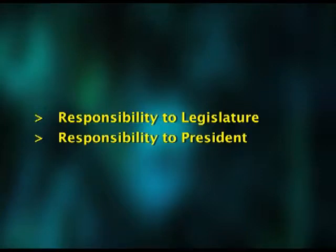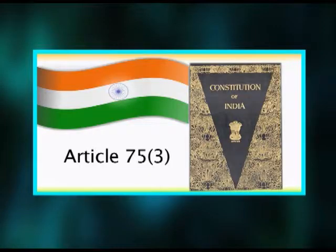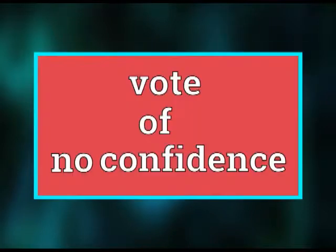Regarding Responsibility to the Legislature, Article 75(3) of the Constitution of India provides that the Council of Ministers is collectively responsible to the House of People. The result is that the House of People can dismiss the Ministry by passing a vote of no confidence against it or rejecting a bill introduced by the Ministry.